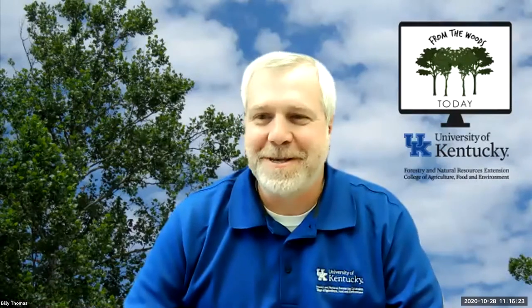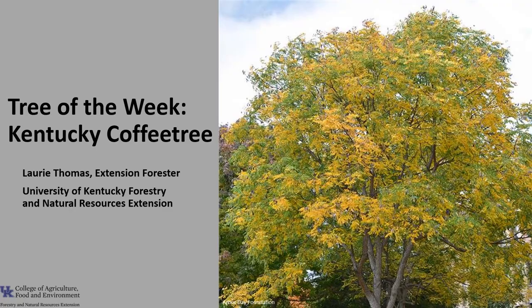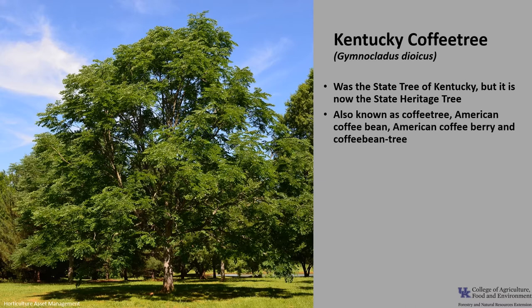I'm Laurie Thomas with the University of Kentucky Forestry and Natural Resources Extension, and I'm here with the tree of the week: the Kentucky coffee tree. Kentucky coffee tree, Gymnoclatus dioecus, was at one time the state tree of Kentucky, but it is now the state heritage tree. It is also known as coffee tree, American coffee bean, American coffee berry, and coffee bean tree. It is in the Fabaceae or the pea family, but it does not have the nitrogen fixing bacterium — the rhizobium species — on its root system like many trees in the Fabaceae family do. It is one of three species in the genus Gymnoclatus; the other two are native to East Asia and Burma.